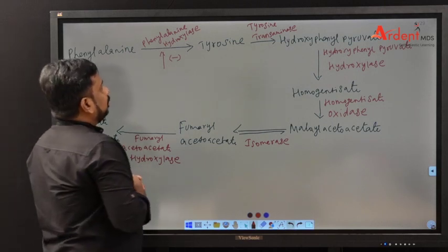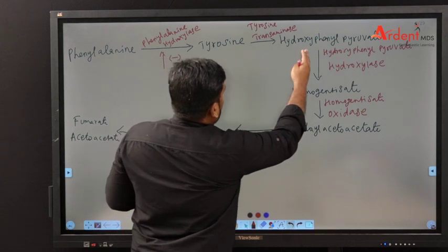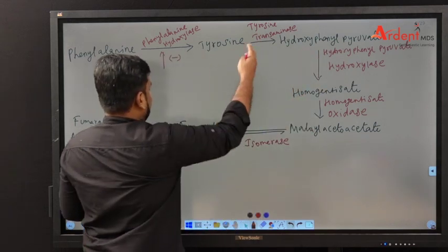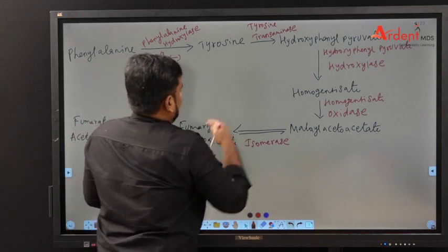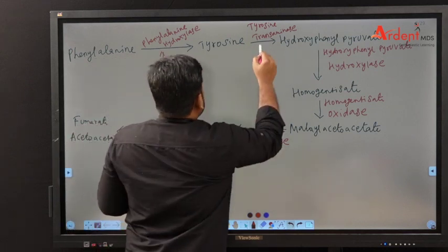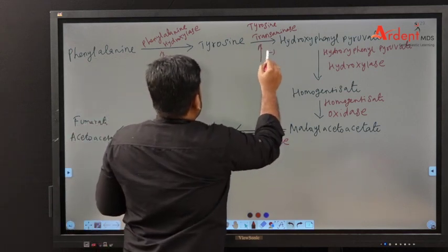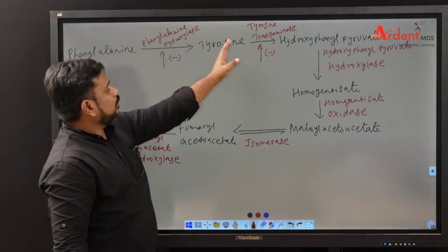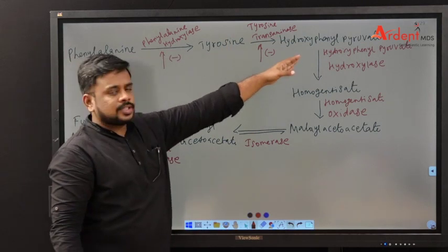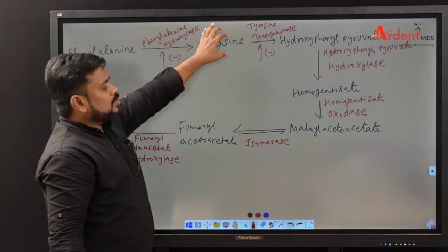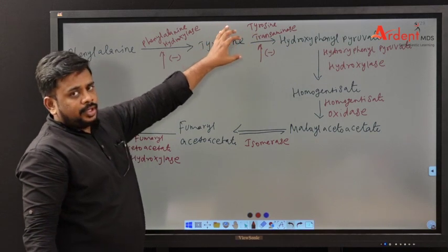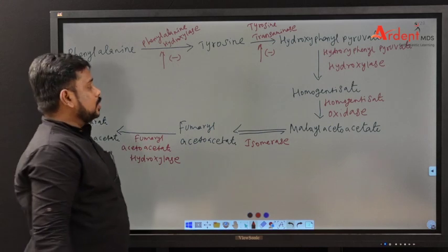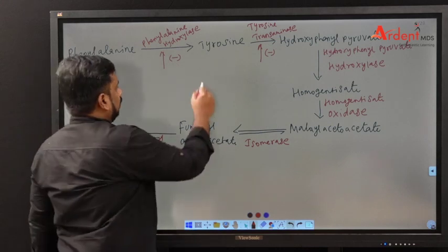In the second step, tyrosine is converted into hydroxyphenylpyruvate by the enzyme tyrosine transaminase. A defect in this enzyme means tyrosine cannot be converted to hydroxyphenylpyruvate, so tyrosine accumulates — this is called tyrosinemia type 2.